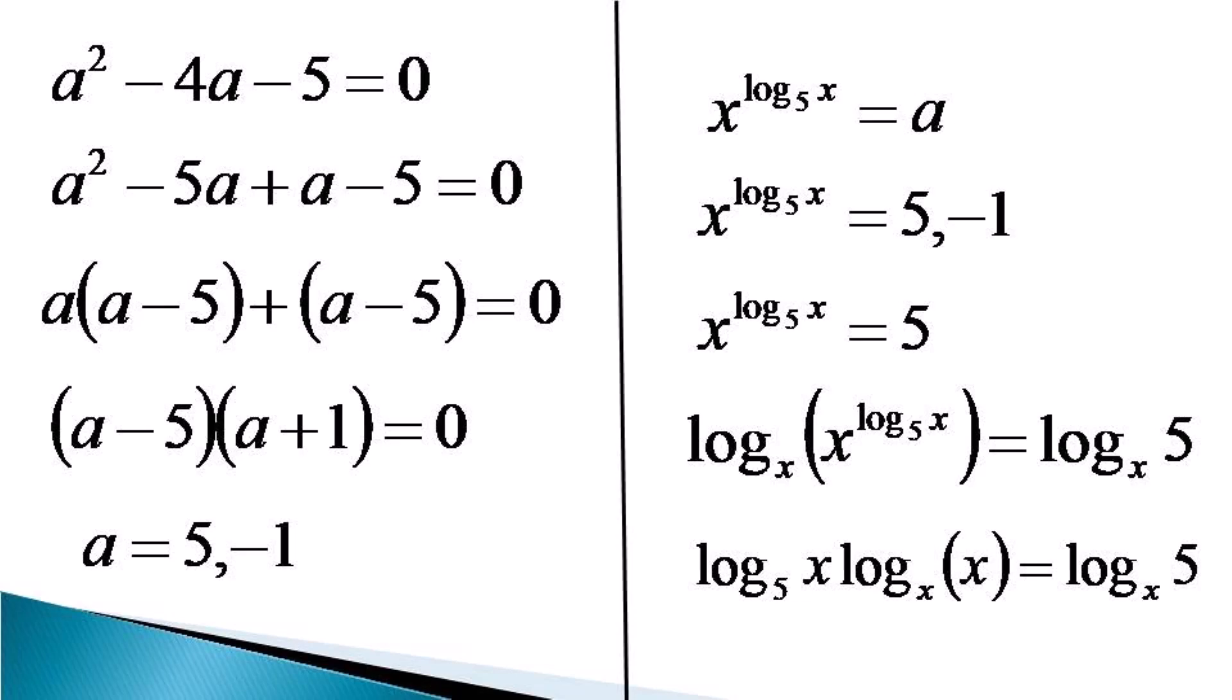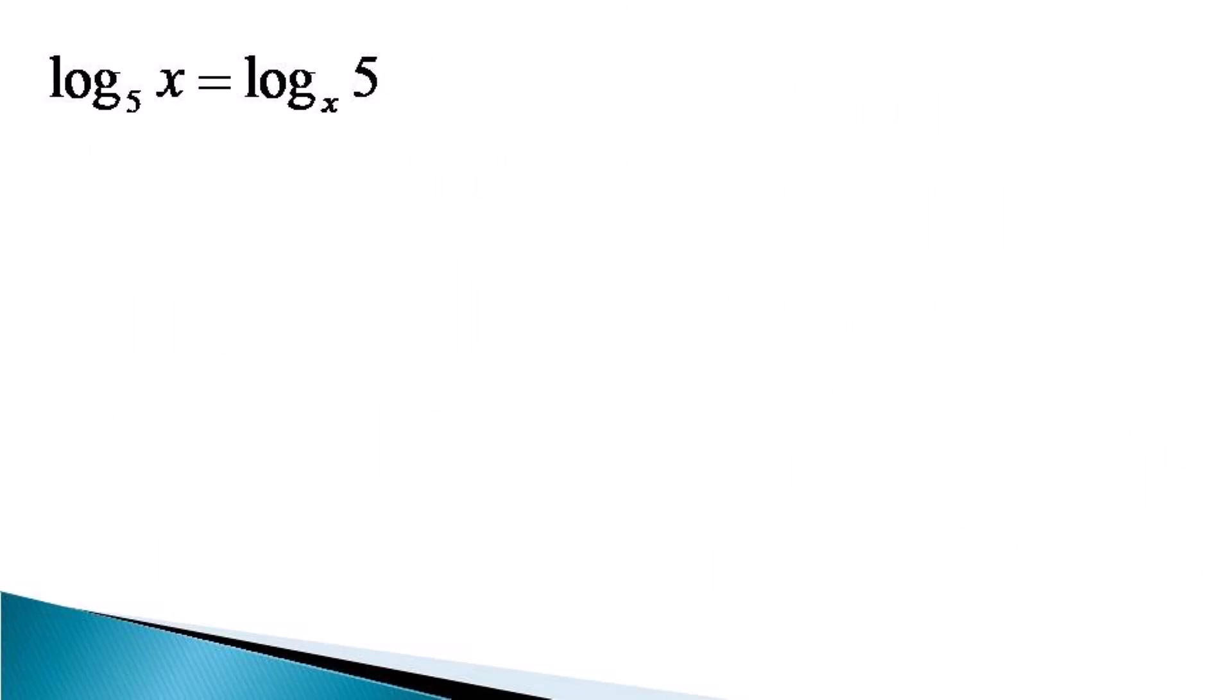It becomes log x to the base 5 into log x to the base x is equal to log 5 to the base x. Log x to the base x is unity. So we get log x to the base 5 on the left hand side becoming equal to log 5 to the base x on the right hand side.